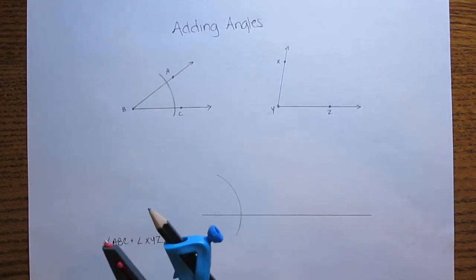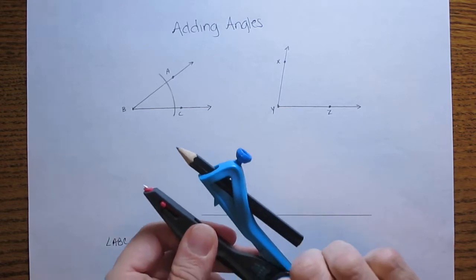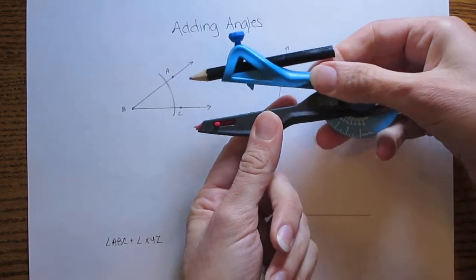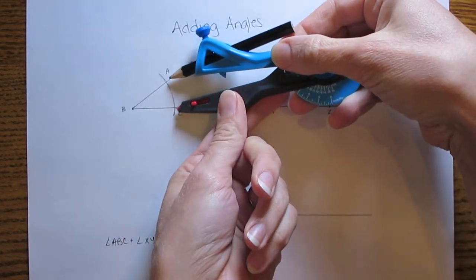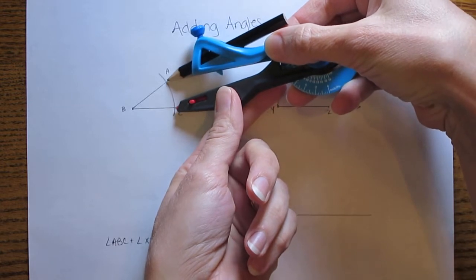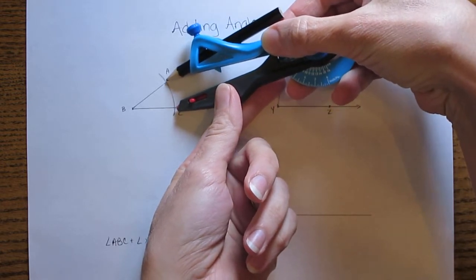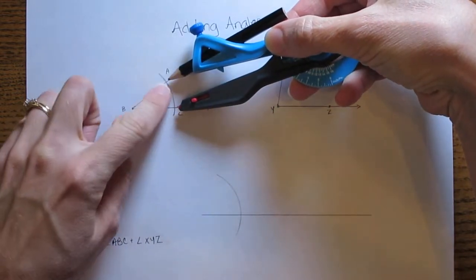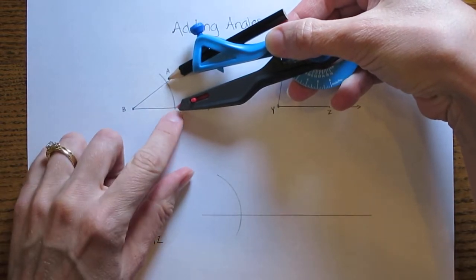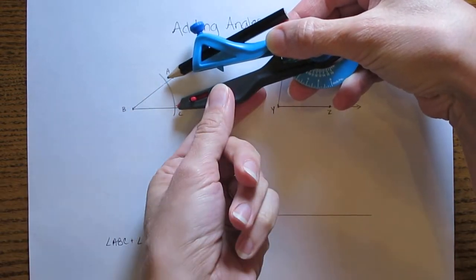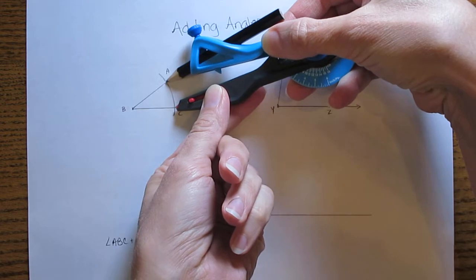Now I'm going to go back to my angle that I'm copying and I want to adjust my compass so that it opens to the same width of the angle where my arc passed through it. So from this part of the arc to that part of the arc I'm going to open up my compass to match that distance.